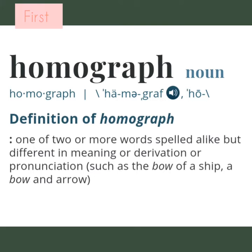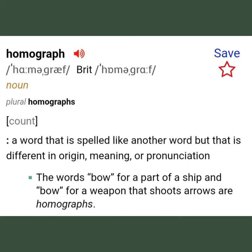Okay, first: homograph. Definition of homograph — one of two or more words spelled alike but different in meaning, derivation, or pronunciation, such as the bow of a ship and a bow as a weapon. Look at the example: the word bow for a part of a ship and bow for a weapon that shoots arrows are homographs.